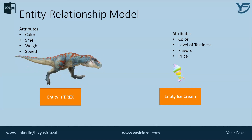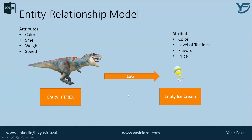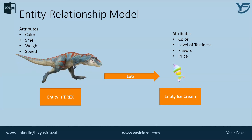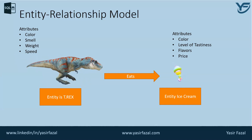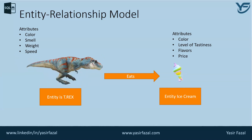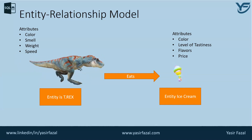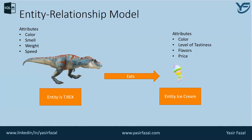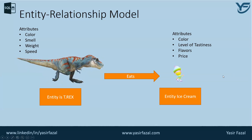We have defined the entities and the attributes, but the relationship is basically missing. The relationship here is that T-Rex would like to eat the Ice Cream. So basically when we talk about the Entity Relationship model, we are talking about two or more entities and the relationship among them or between them.